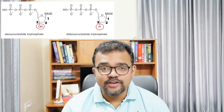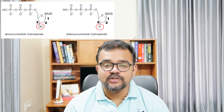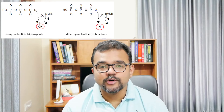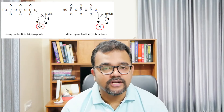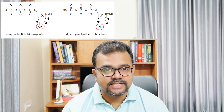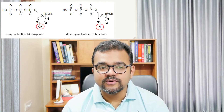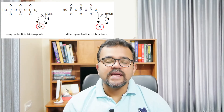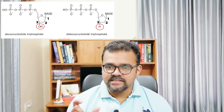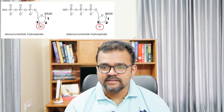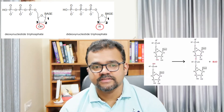Dideoxynucleotide triphosphates or DDNTPs have no 3'OH group when compared to dNTPs or deoxynucleotide triphosphates. The 3'OH group is where another nucleotide may be added during strand synthesis, that is during the formation of a phosphodiester bond.